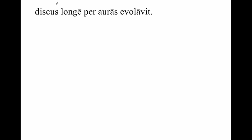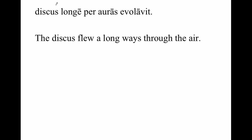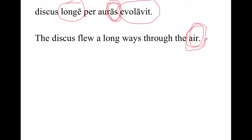Discus longe per auras evolavit. The discus flew a long ways through the air. 'Auras' is accusative plural. Sometimes a language might have something in the plural where we think of air as singular, but if you think about it, air is millions upon billions of atoms of hydrogen, nitrogen, oxygen, etc. Latin calling it a plural was coincidentally a little more accurate.